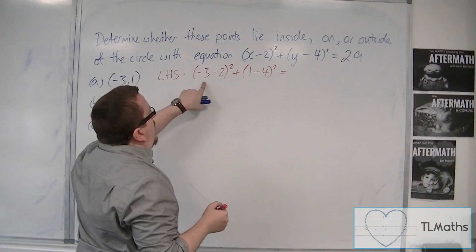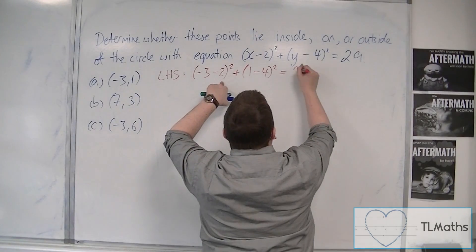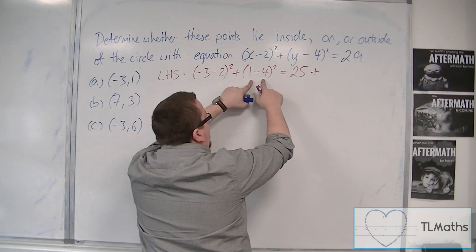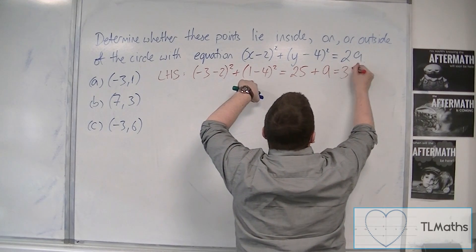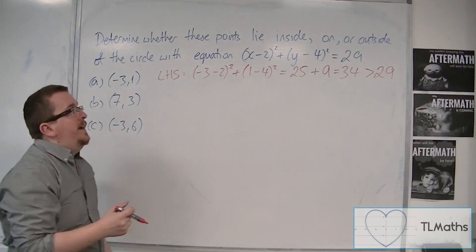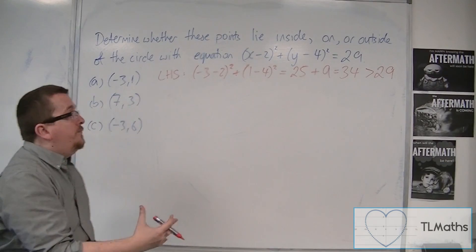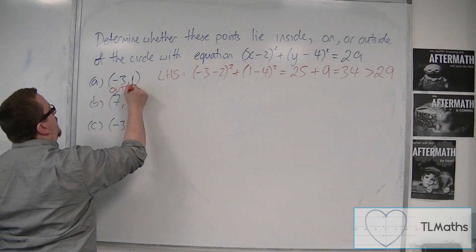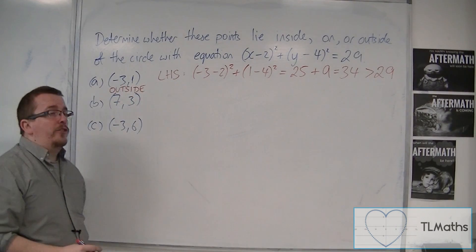So we get -3 take away 2, so that's -5. So -5 squared is 25, plus 1 minus 4, that's -3, squared is 9. So that's 34. Now that's clearly greater than 29. And if you get a value that is greater, then (-3, 1) lies outside the circle. So we definitely know (-3, 1) is outside.